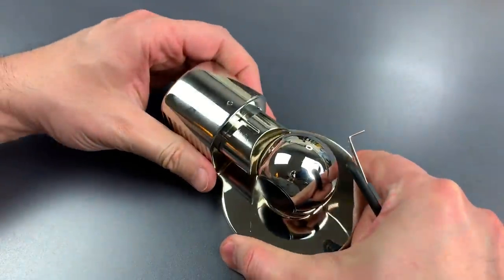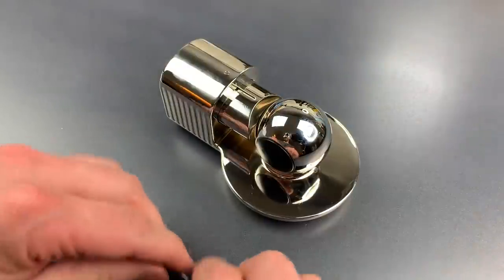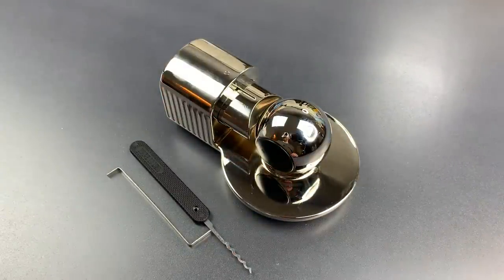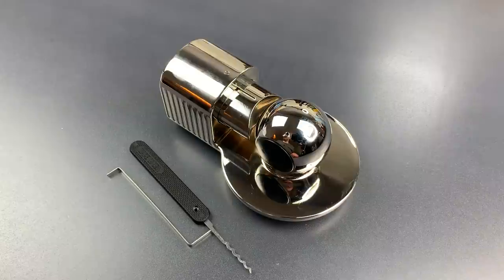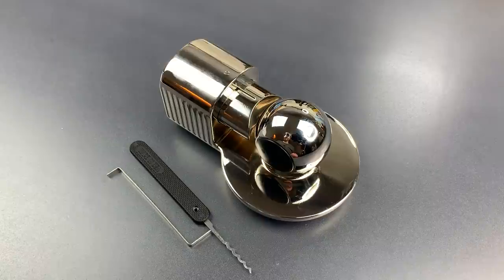So as you saw, this lock can be defeated very quickly with a relatively unskilled raking attack. And contrary to the claims on the lock's packaging, it's really hard to imagine a lock that resists picking less than this one.